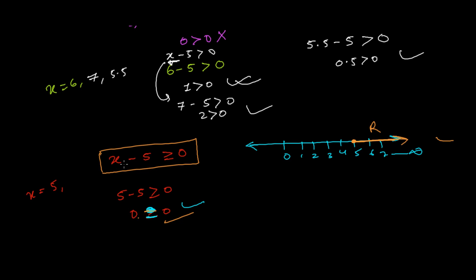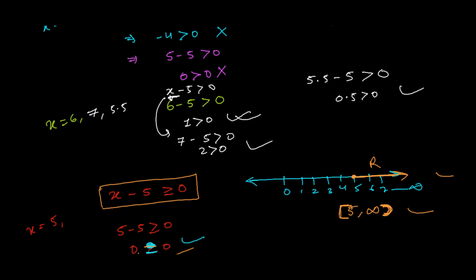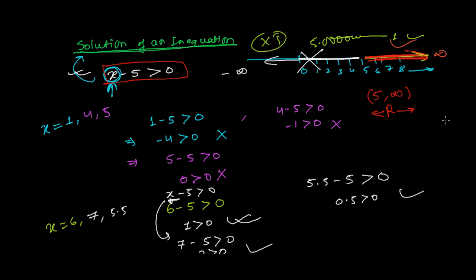So if you want to write in bracket form, since 5 is included, we use a closed bracket at 5, and an open bracket towards infinity since we can't include infinity. The solution of x minus 5 greater than or equals to 0 is [5, ∞). Simply put, the solution of an inequation means only those values of the variable which satisfy that inequation — the left-hand side should satisfy the right-hand side. See you in the next video, goodbye!